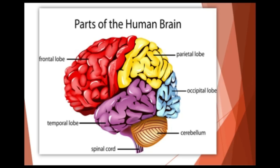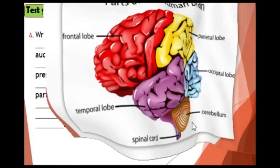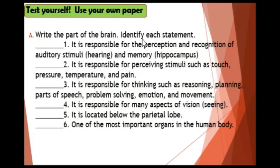This is a sample image of the parts of the human brain showing the frontal lobe, temporal lobe, spinal cord, cerebellum, occipital lobe, and parietal lobe. Now let's try to test yourself — use your own paper.